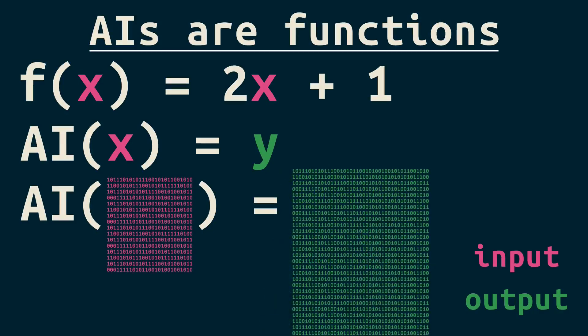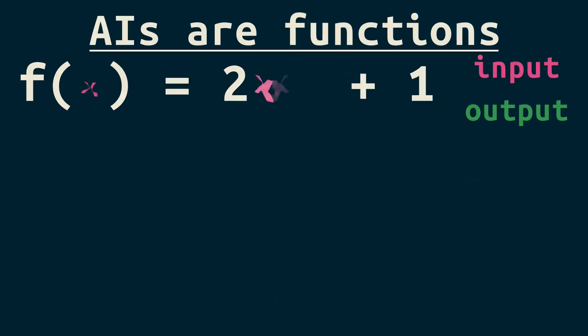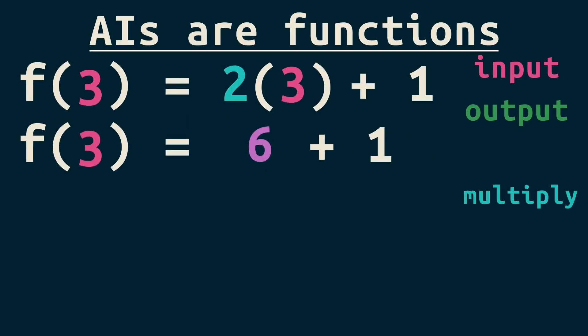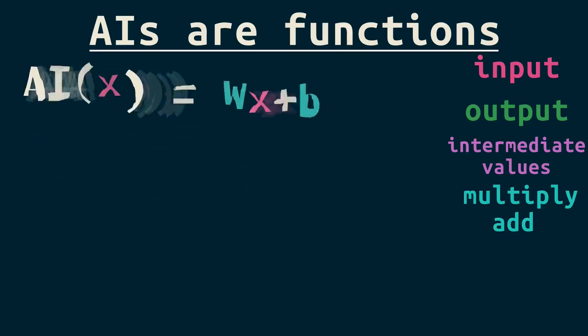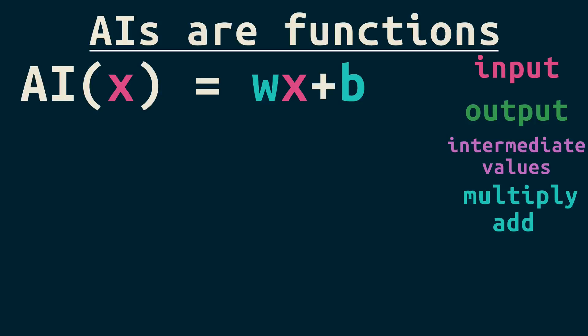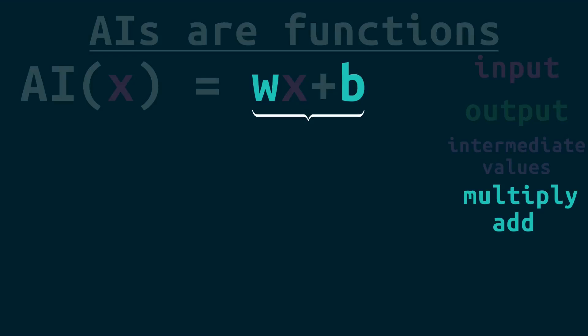Our easy function gets a number for output by first multiplying by 2 to get 6 as an intermediate value, and then adding 1. Here's a simplified formula for one tiny part of a neural network, like those in ChatGPT or StableDiffusion. You can see it also has values to multiply and add. Values like this are the parameters people are talking about when they give the size of an AI model.